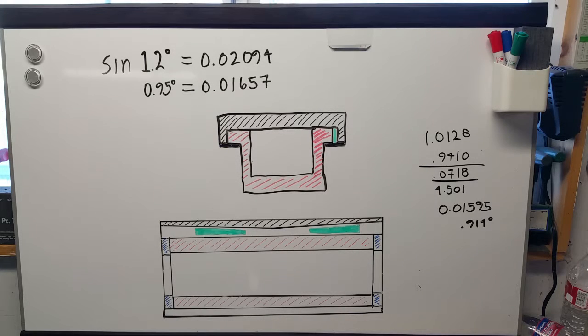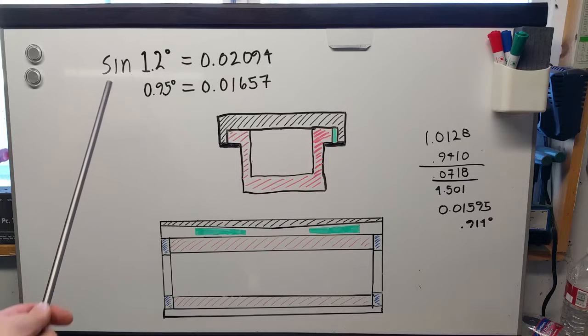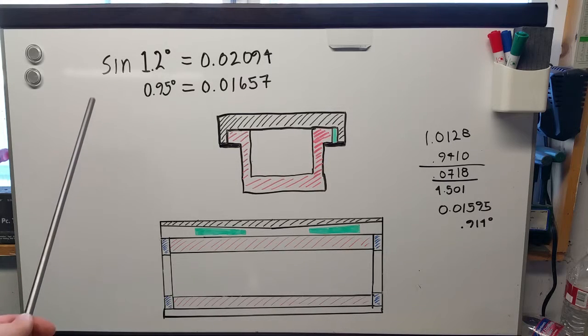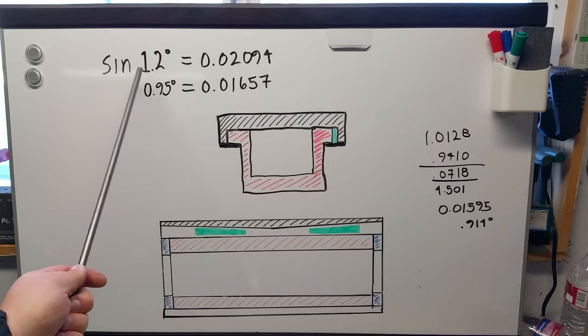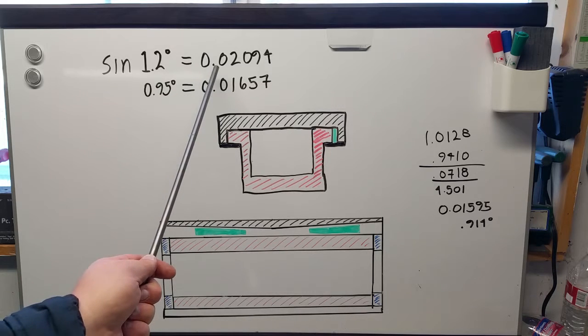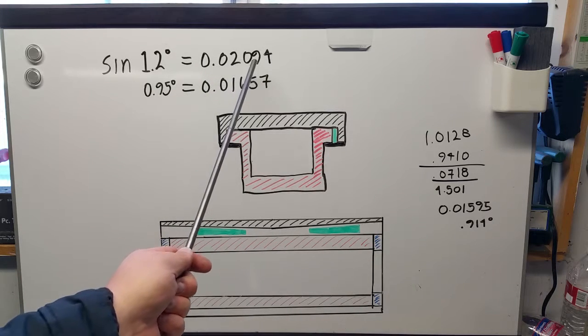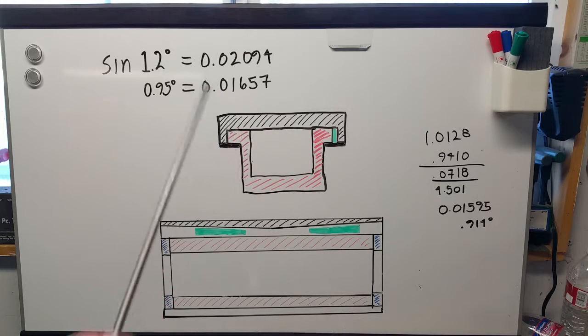When you're machining a precision angle, what you do is you build up a gauge block stack. The first place you start is by running the dimension that you want through the sine function. You take the sine of the angle you want and that gives you the rise per inch or per increment, per any dimension. In this case, we're going to be talking inches.